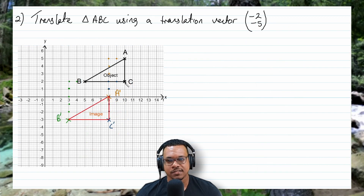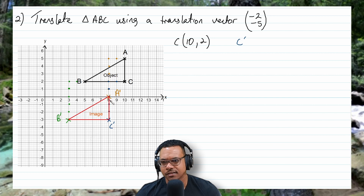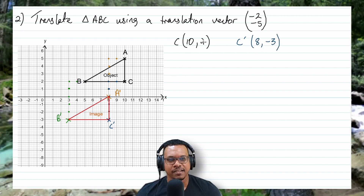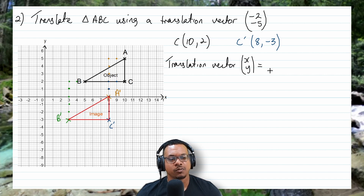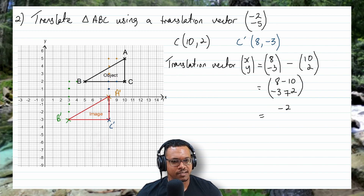Let's try that with point C. The object C has coordinates (10, 2) and the image C prime has coordinates (8, negative 3). So the translation vector equals the image coordinates minus the object coordinates: (8, negative 3) minus (10, 2) gives 8 minus 10 equals negative 2, and negative 3 minus 2 equals negative 5. We get back the translation vector of (negative 2, negative 5).